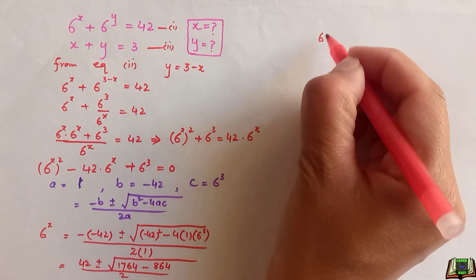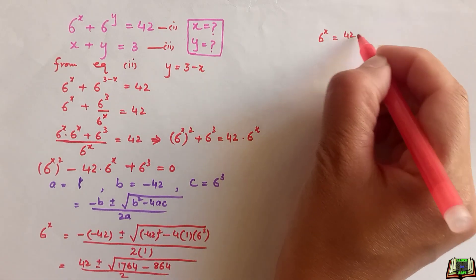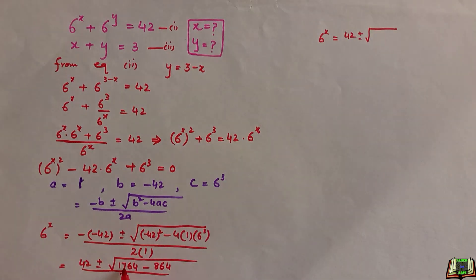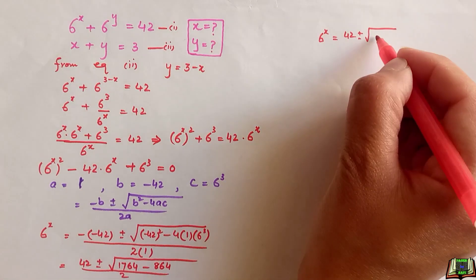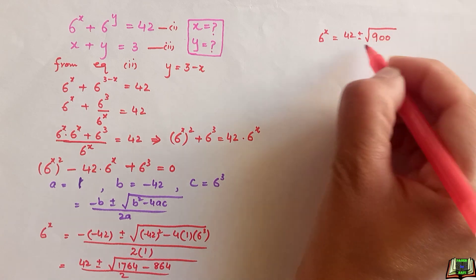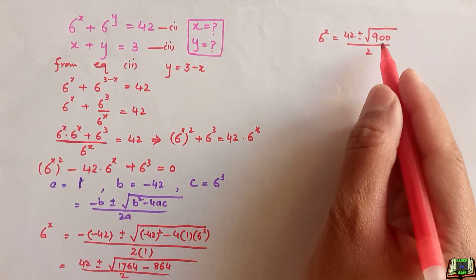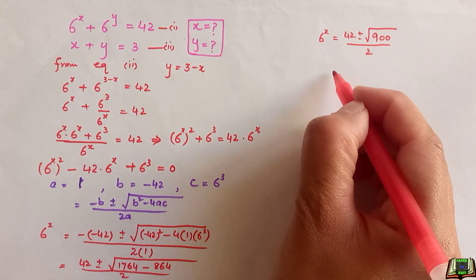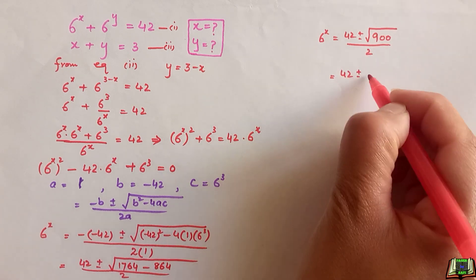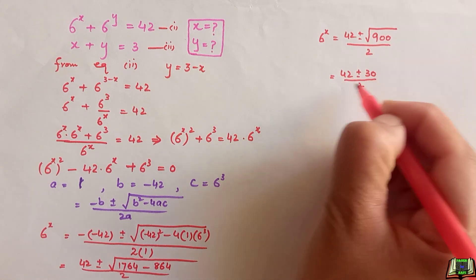Subtracting 864 from 1764 gives us 900, and the square root of 900 is 30. So 6 to the power x equals 42 plus or minus 30, divided by 2.